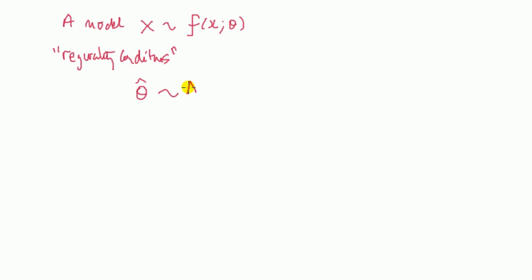Then for large samples, under what they call regularity conditions—which basically just means some technical details you don't need to know—the MLE is asymptotically normal with mean θ and variance 1 over this thing called the information number, capital I(θ), because it's a function of theta.